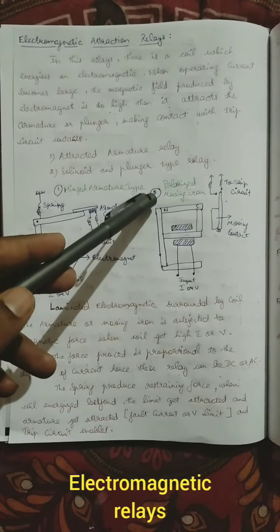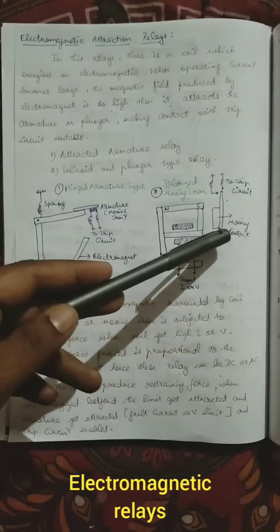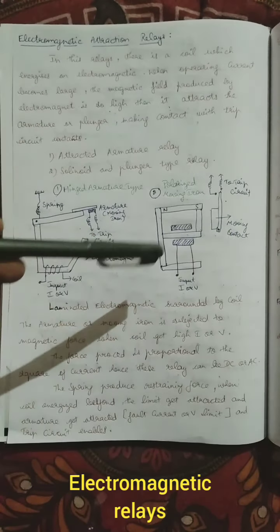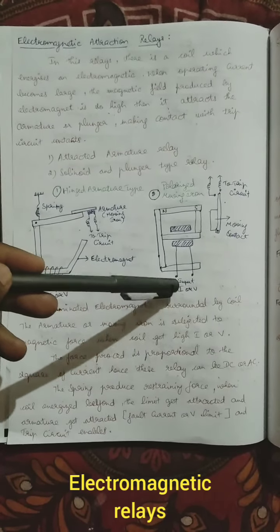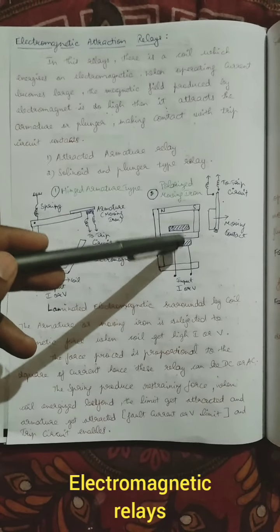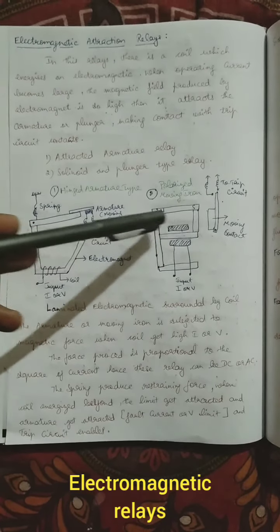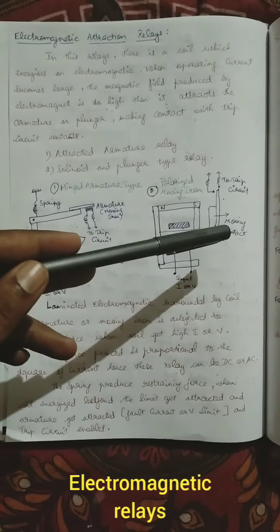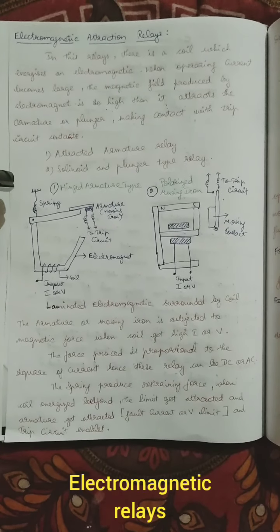The same principle applies for the polarized moving iron type. Here the moving iron gets attracted and initiates the tripping circuit. The coil gets energized and the magnet — with its north and south poles — produces forces which attract the moving contact so it connects to the tripping circuit. This is the basics of the electromagnetic attraction relay for both subtypes.